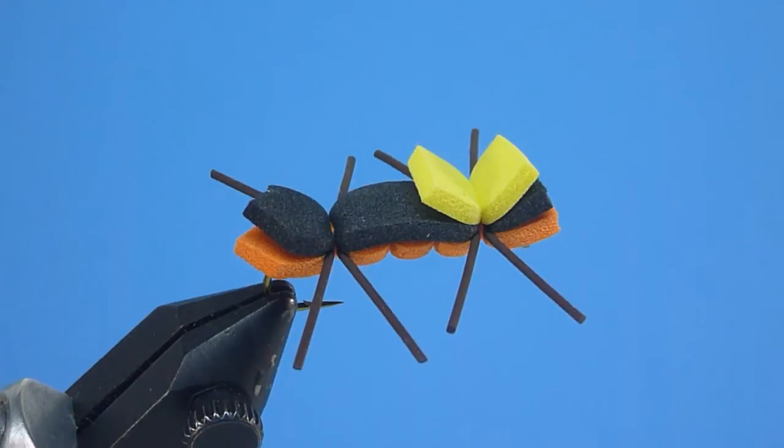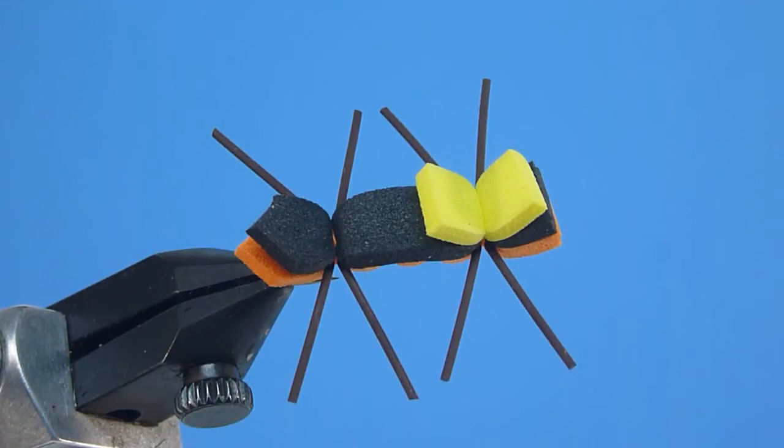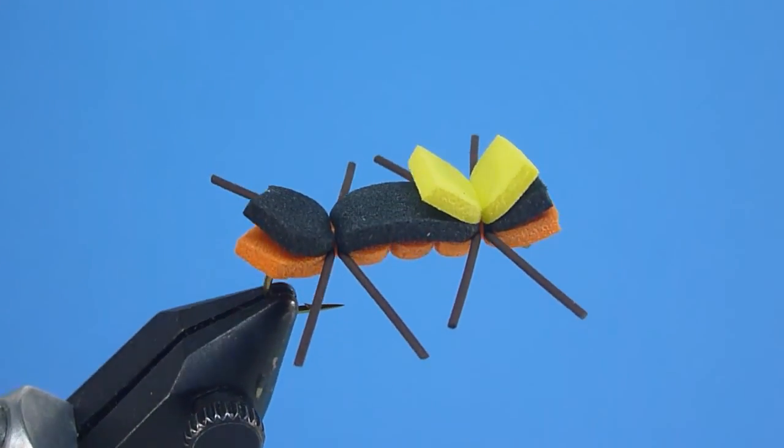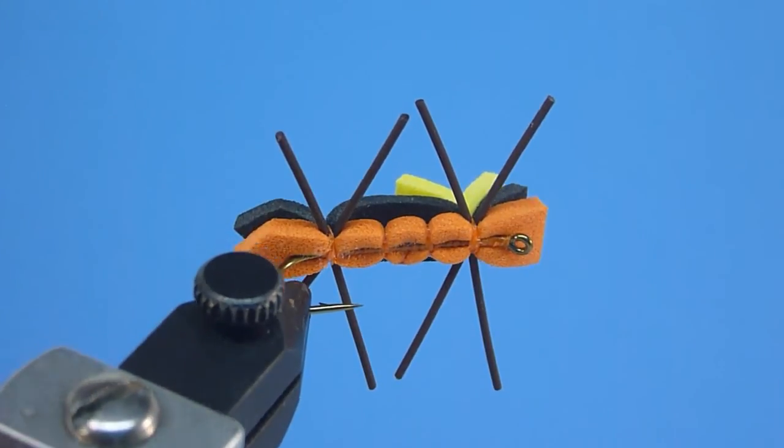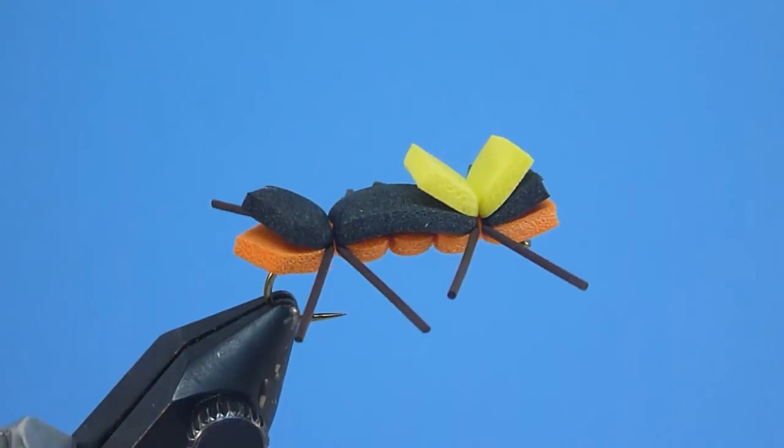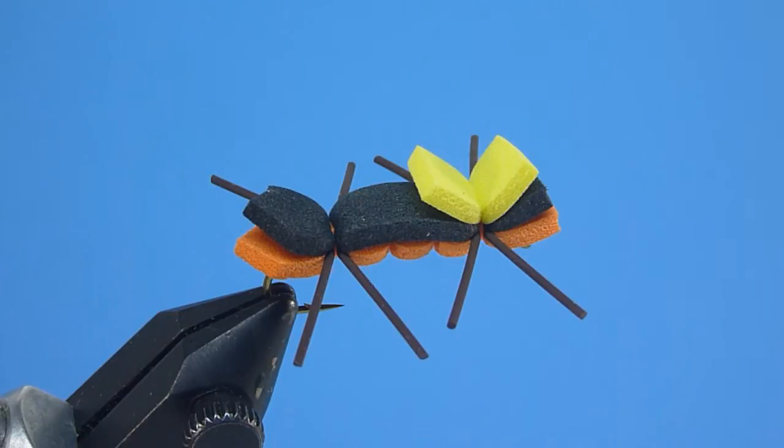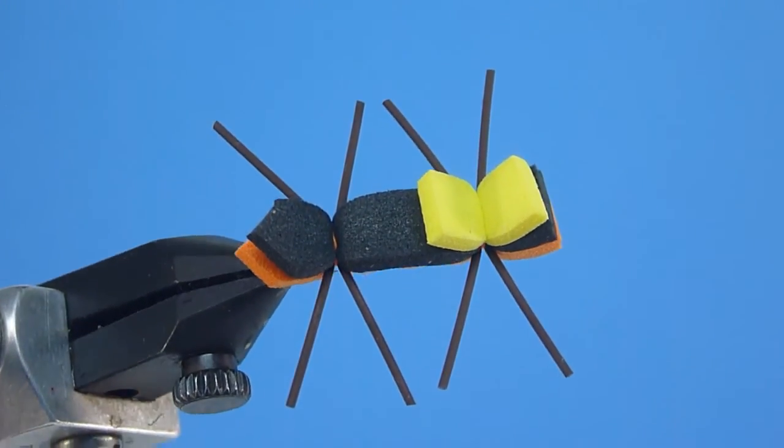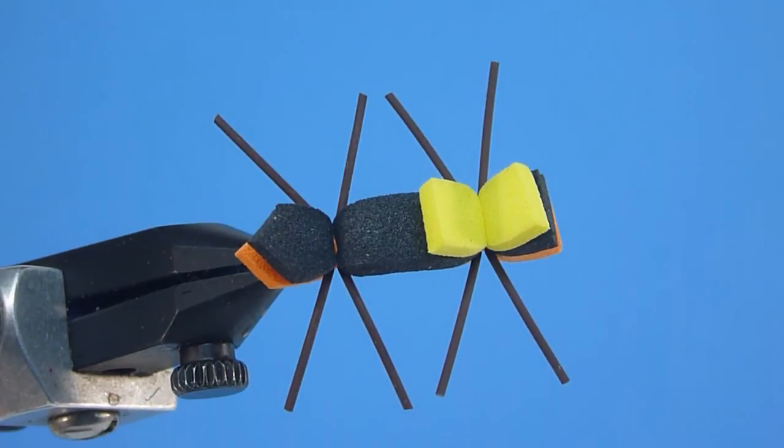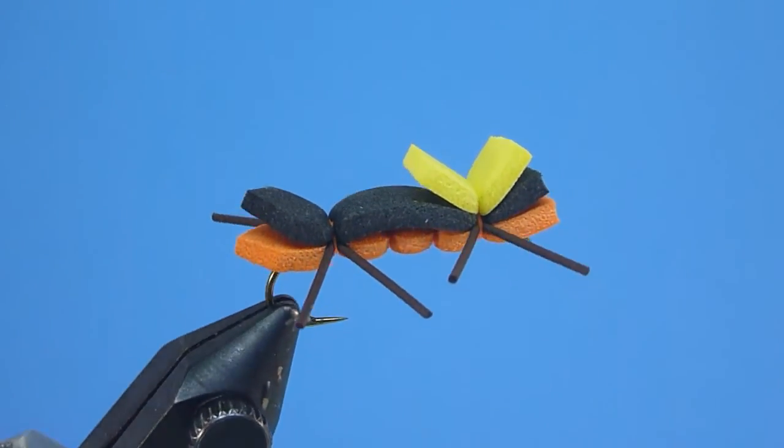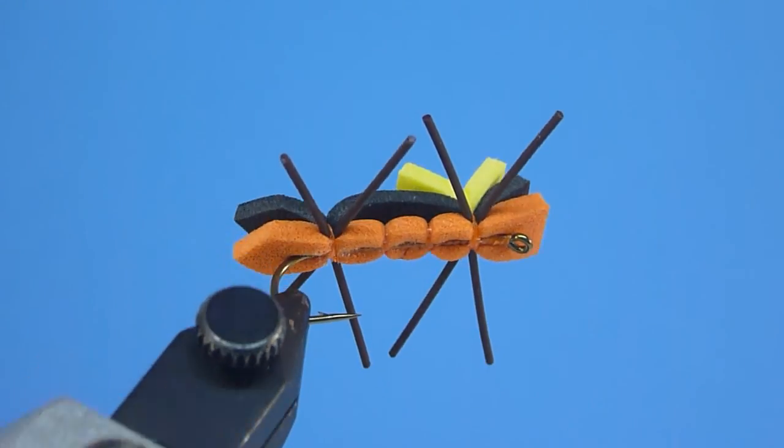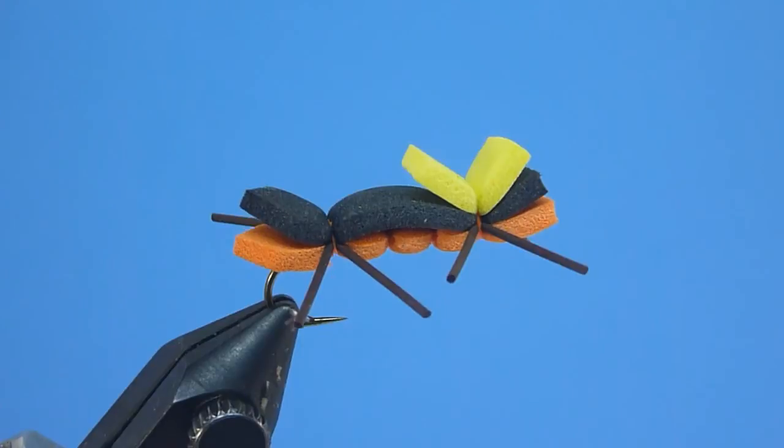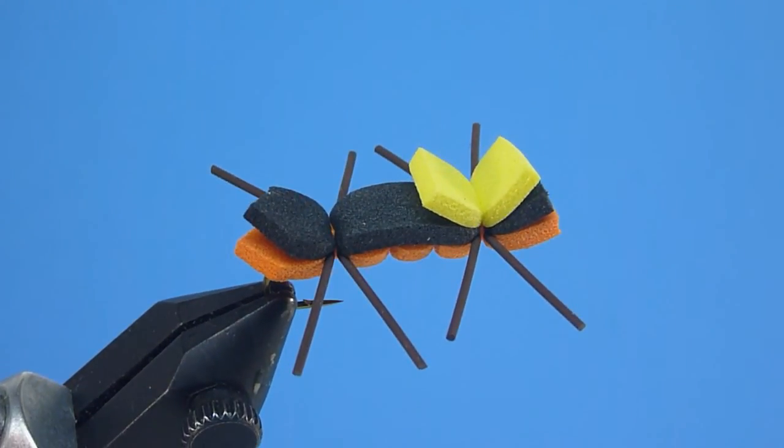Well friends, there we have it, the Chernobyl Ant tied start to finish. This simple, high-floating, all-foam favorite is proven equally irresistible to trout, bass, panfish, and more on both western and eastern cold-water and warm-water fisheries alike. An especially wise choice in the summertime and fall, when all of the aforementioned game fish can be found eagerly slurping hoppers, beetles, crickets, and other such meaty morsels from the surface with reckless abandon. I so hope you will give tying and fishing this fast-food version of the wildly-deadly Chernobyl Ant a try.